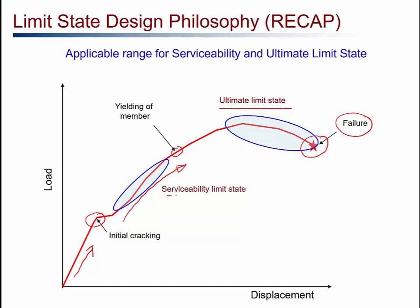On the other hand, the serviceability limit state deals with the day-to-day use of the structure and its performance during service life. For example, during its service life, the structure should not have excessive cracks, excessive displacement, deformations, or vibrations. So when you are designing a structure, it must meet both the serviceability limit state and the ultimate limit state.